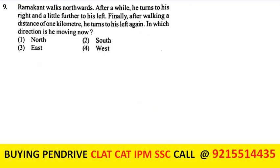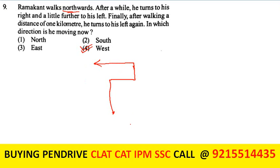Ramakant walks northward, then turns right, then a little further right, then a little further left, and finally after walking 1 kilometer turns left again. Tracing the direction changes: right, right, left, left from north gives west. He is moving in the west direction. The fourth option is the answer.